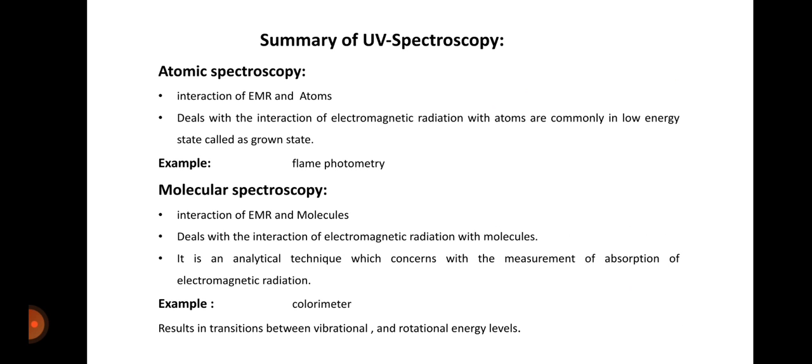The overall summary of UV spectroscopy. Atomic spectroscopy is the interaction of EMR and atoms. It deals with the interaction of electromagnetic radiation with atoms commonly in low energy state, which is called ground state. For example, flame photometry.